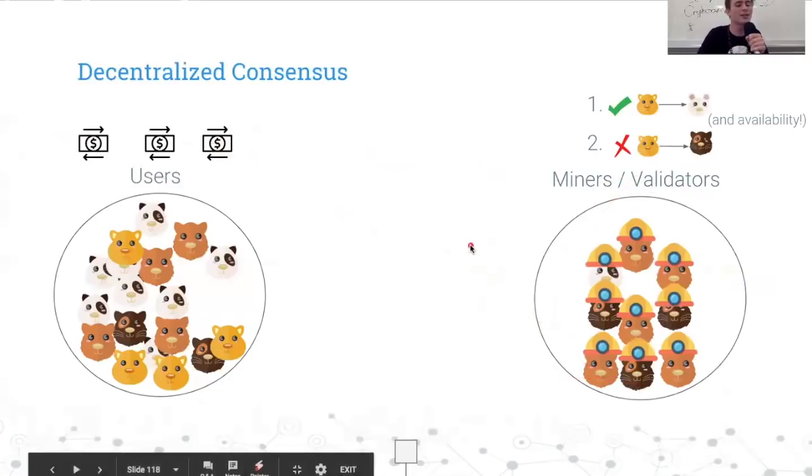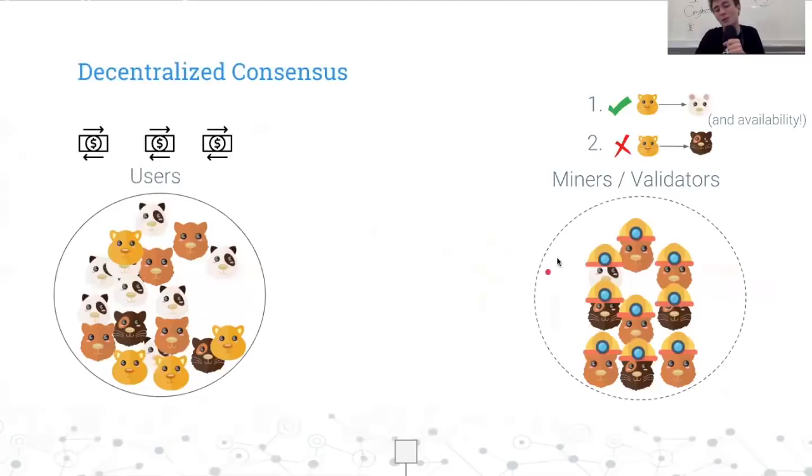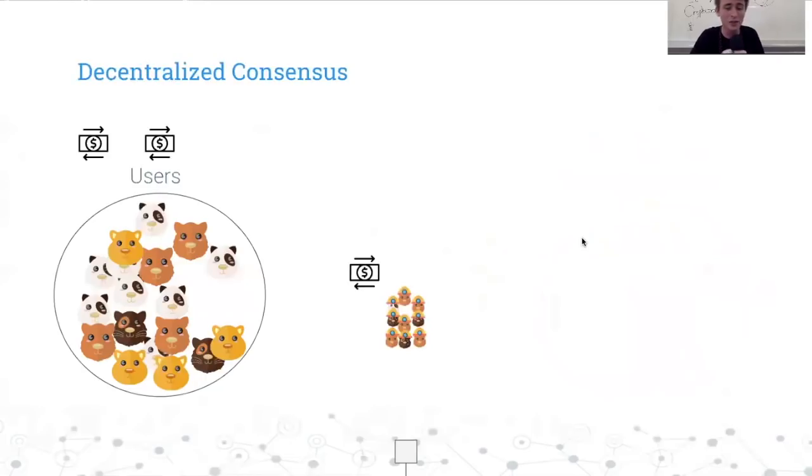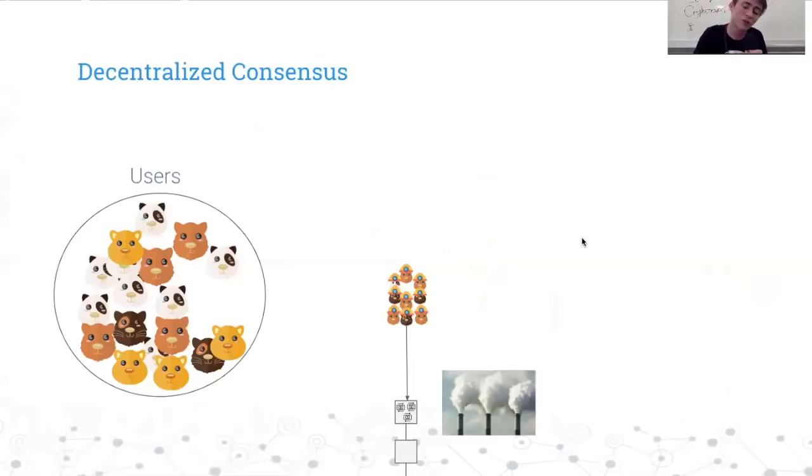This applies to all decentralized consensus protocols, whether it be proof of work, proof of stake, etc. You have different levels of flexibility on who can join. A nice decentralized consensus protocol will have porous boundaries where anyone can become a miner and start validating and forming consensus. This group of miners will pull transactions from the users, determine the order, and create blocks. These blocks will have an ordering of those transactions. The blocks in proof of work are voted on by mining, running hash functions and burning energy. That's kind of our votes on what the main chain is.